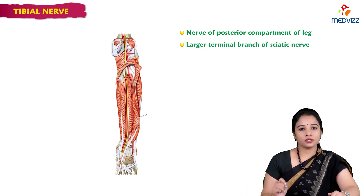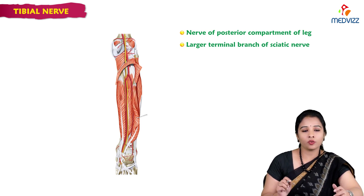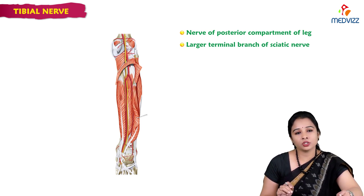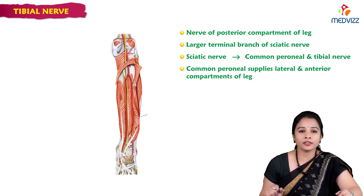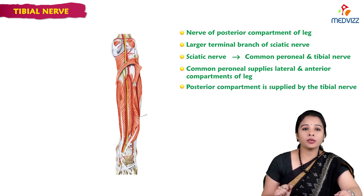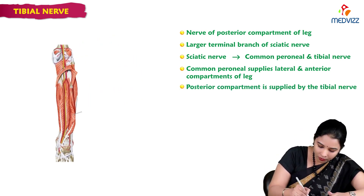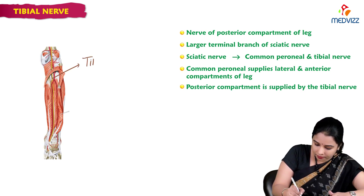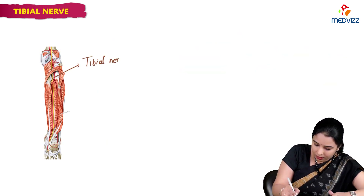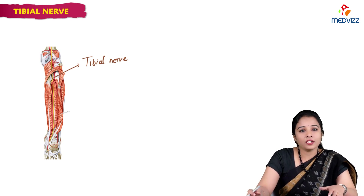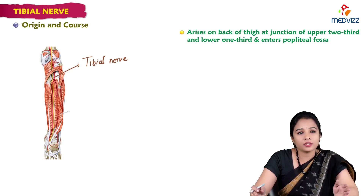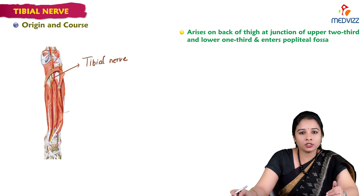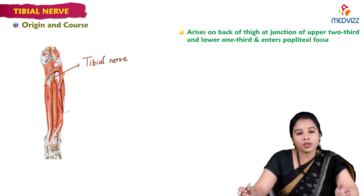Tibial nerve is the larger terminal branch among the two terminal branches of the sciatic nerve. We know the sciatic nerve divides into common peroneal and tibial nerve. Common peroneal supplies the lateral and anterior compartments of the leg, whereas the posterior compartment is supplied by the tibial nerve. It arises as a branch of the sciatic nerve in the posterior part of the thigh at the junction of the upper two thirds and lower one third.